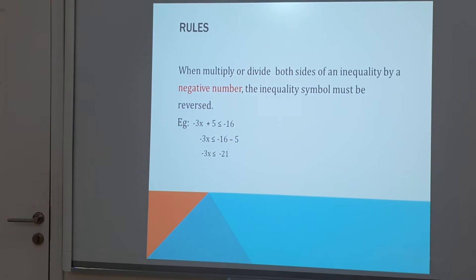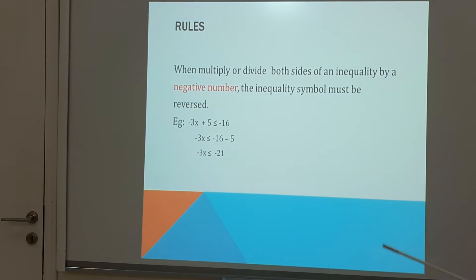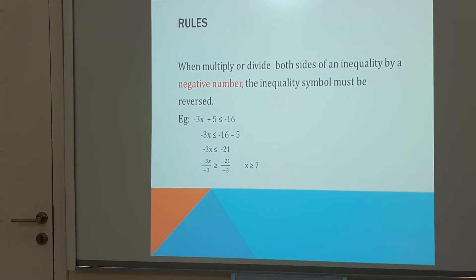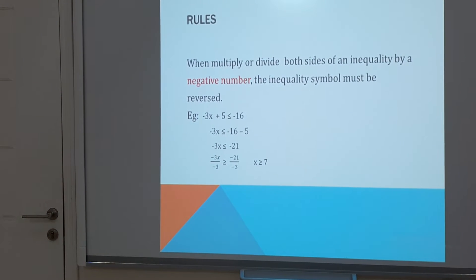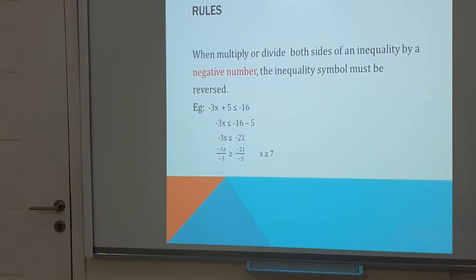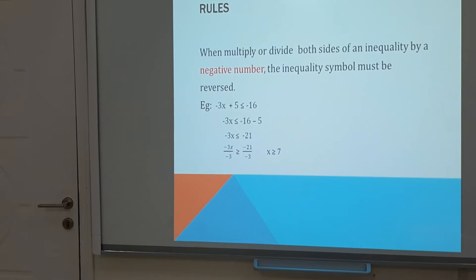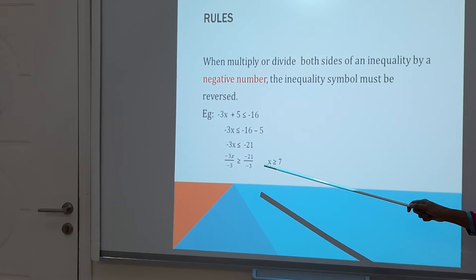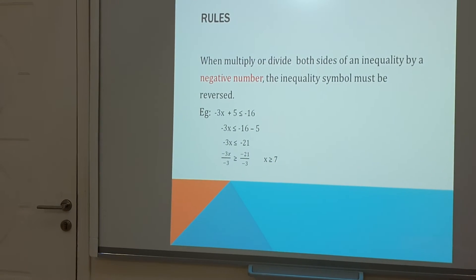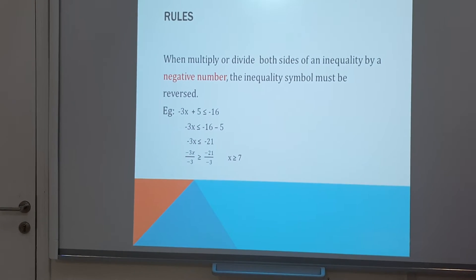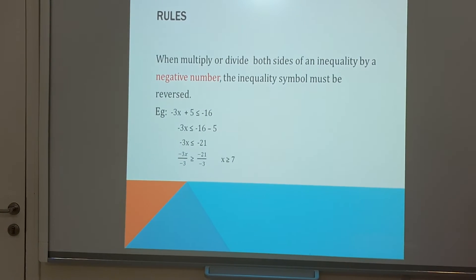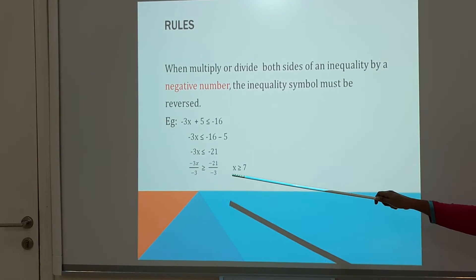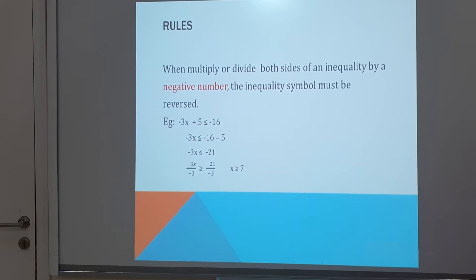Now we are going to divide both sides by negative 3. We have to divide the same number on the right-hand side also. But when we are dividing by a negative number, we need to reverse the inequality symbol. So it was less than or equal to — now it becomes greater than or equal to. When dividing by a negative number, be careful and change the symbol.